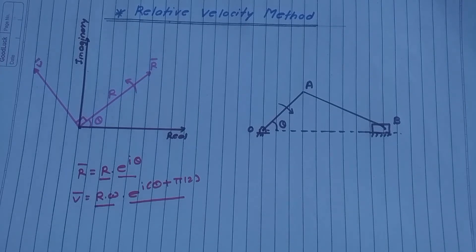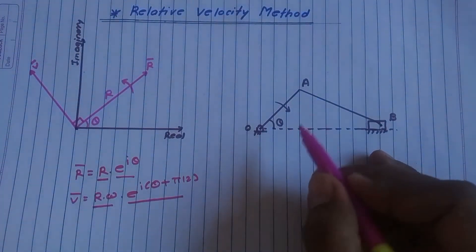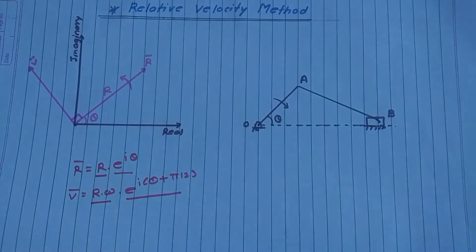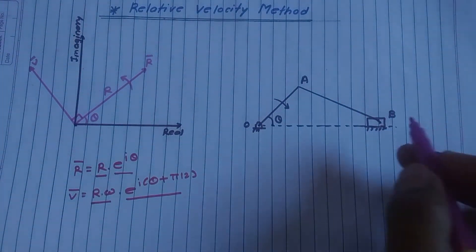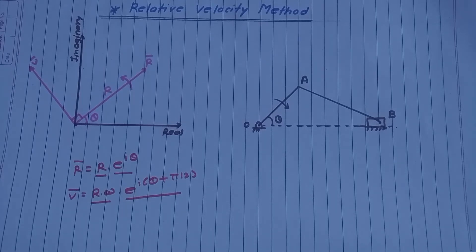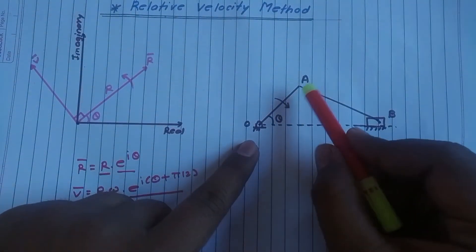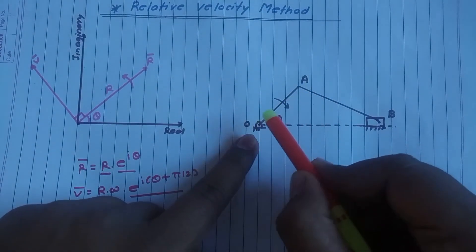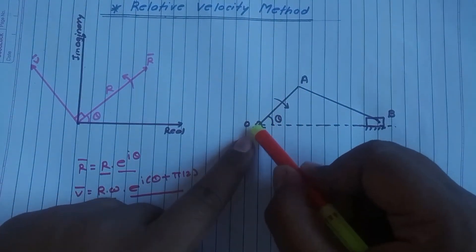Let us consider one example of slider crank mechanism, where OA is a crank, AB is a connecting rod, B is a slider. Now if we consider the slider OA and if you want velocity of A with respect to O because O is a fixed point.